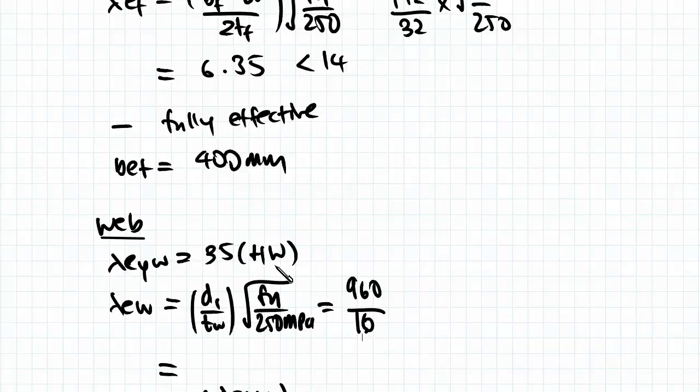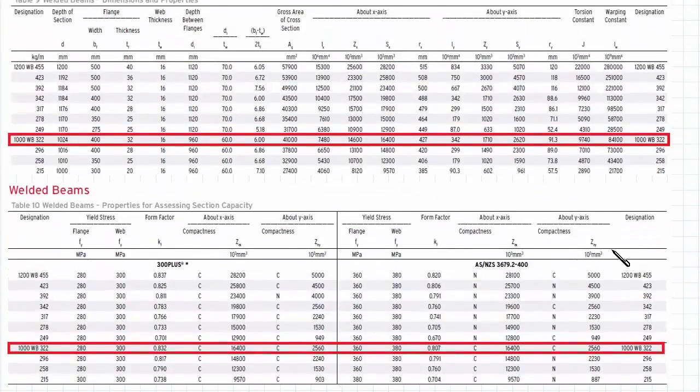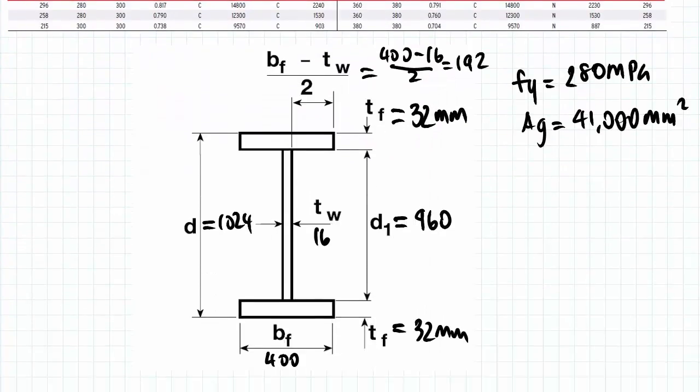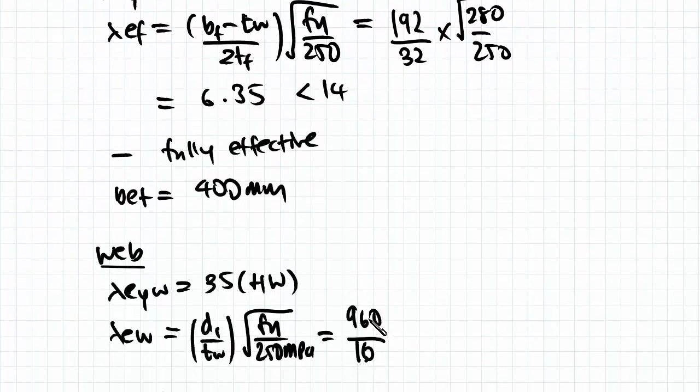This number you can actually find in the 1stil tables straight away. So you can see here under this column, you can find out it's actually equal to 60. So if you were to punch this number, 960 over 16, you'll find that it's also equal to 60. The reason I didn't use it straight away...